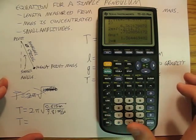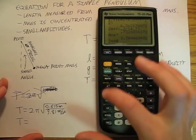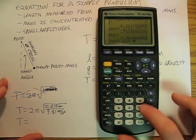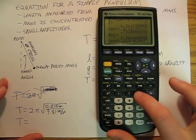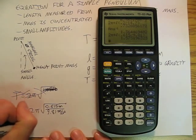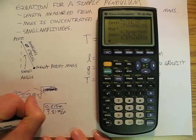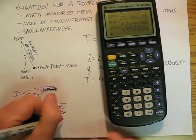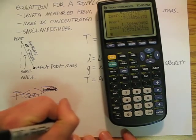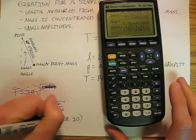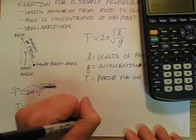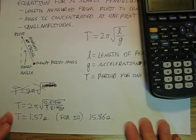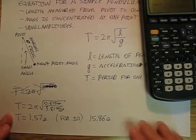2 pi times square root of 0.615 divided by 9.81 is going to be 1.57 seconds. And we measured, for 10 in that situation, what we measured was 15.86 seconds. And so, that seems reasonable to me.